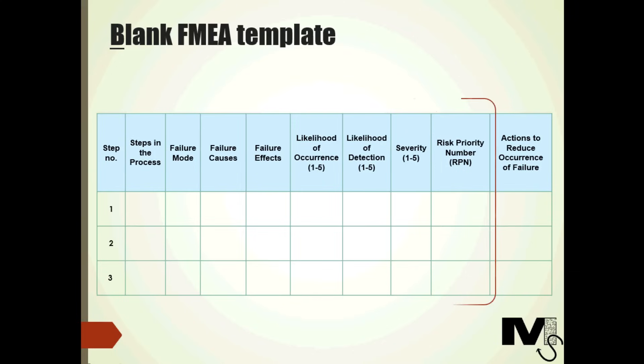Once the three ratings are done, we multiply the three numbers we get to get a risk priority number. This gives us information on which steps to prioritize. And if there are multiple processes that one's running, one could look at the RPN totals for each process and see what can be prioritized.